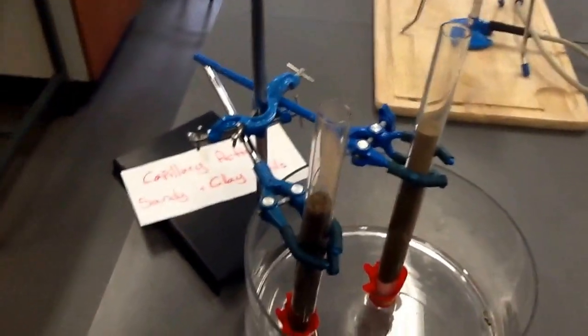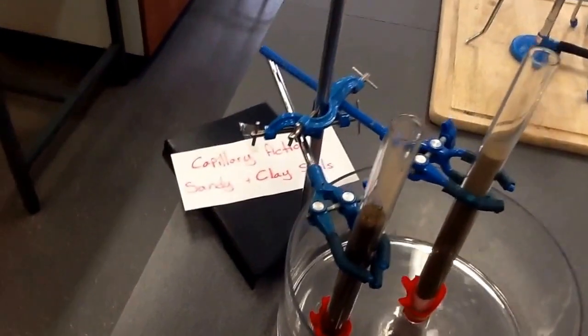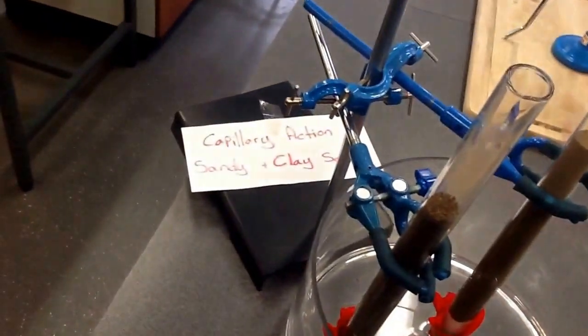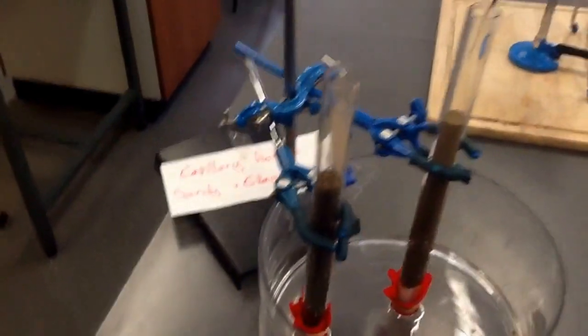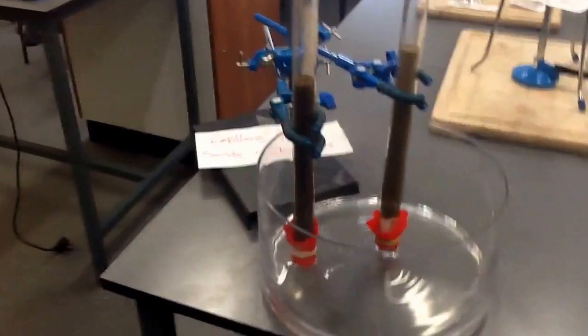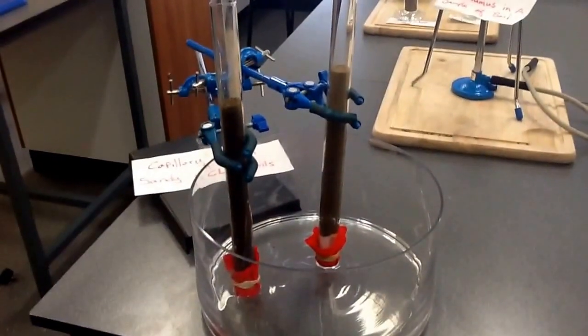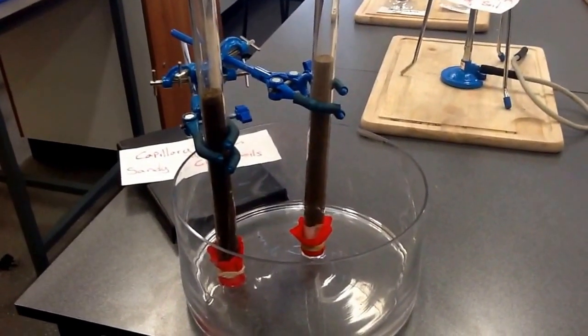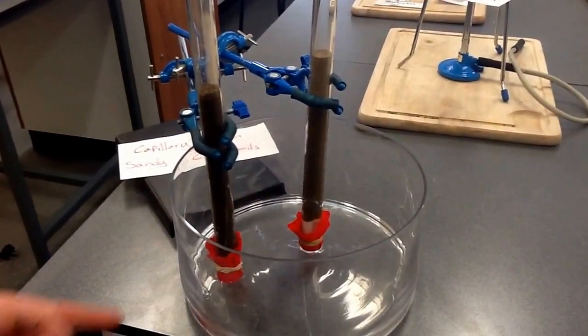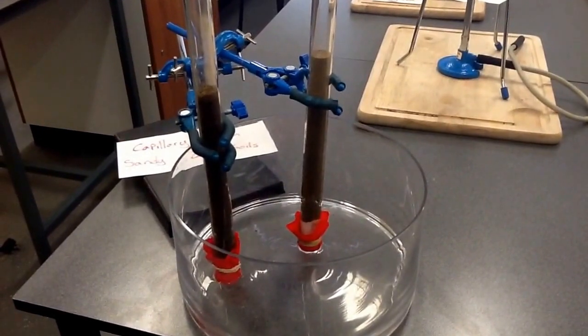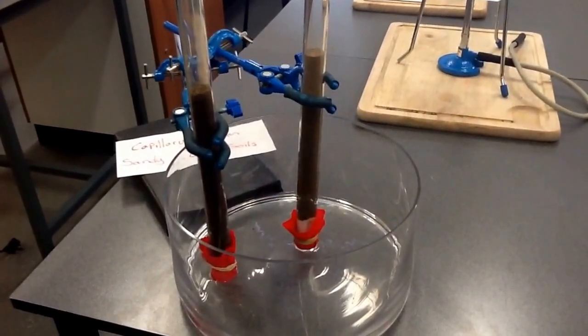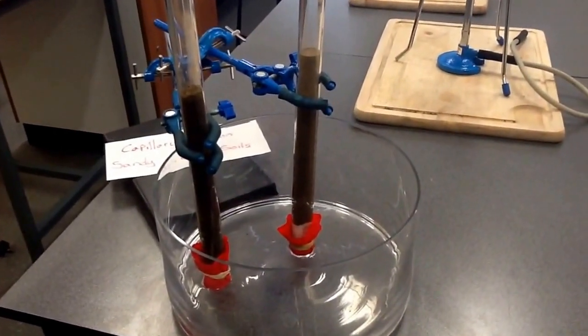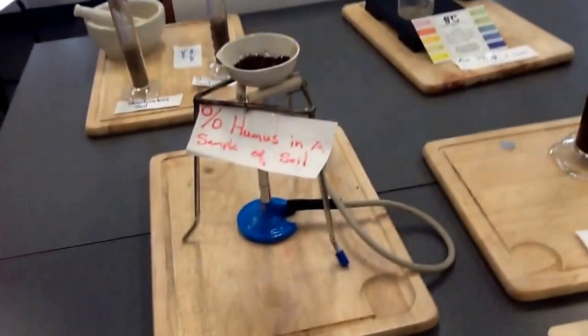The next one are soil experiments. Now, the first one is capillary action to see what's the difference between sandy soil and clay soil. We have water in the large basin and we have sandy soil in one, clay soil in the bottom, muslin cloth in the bottom. Capillary action is the ability of water to rise up through a soil. We notice that the sandy soil is better for capillary action. This is to calculate the percentage of humus in a sample of soil.